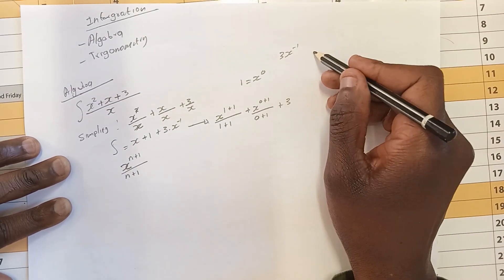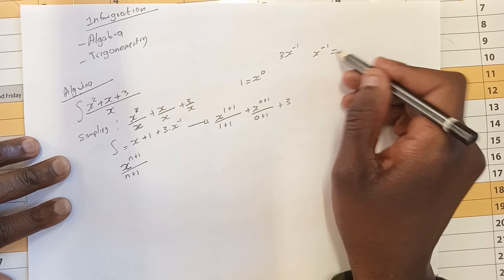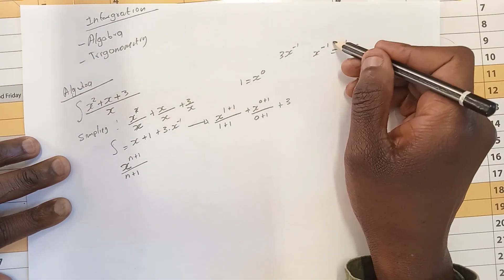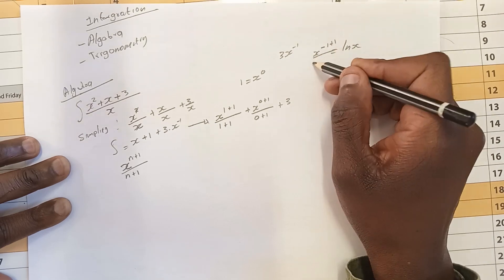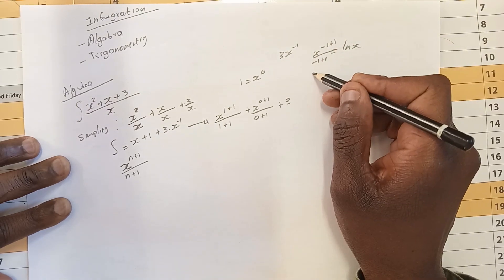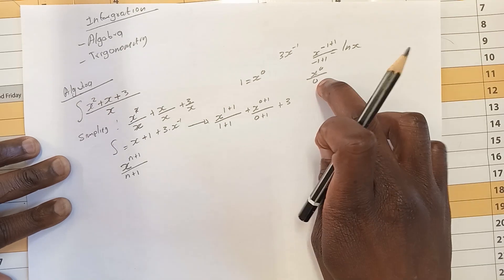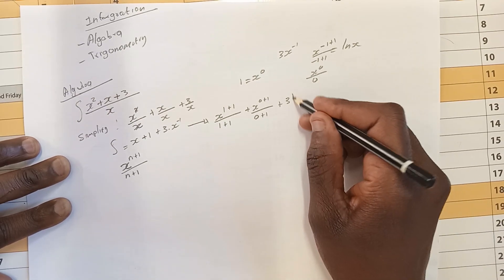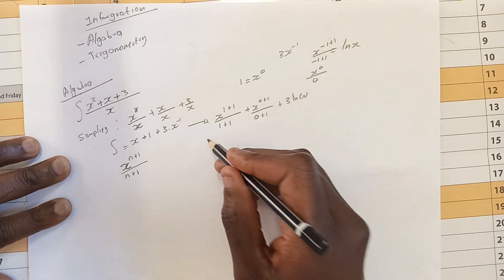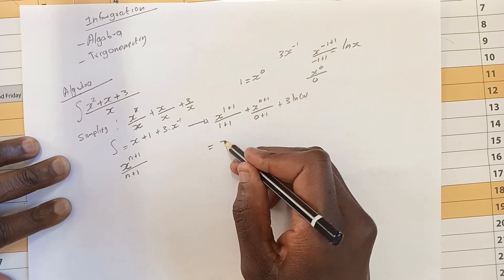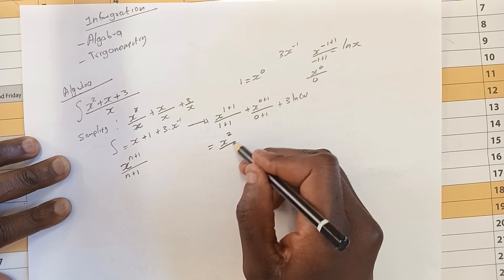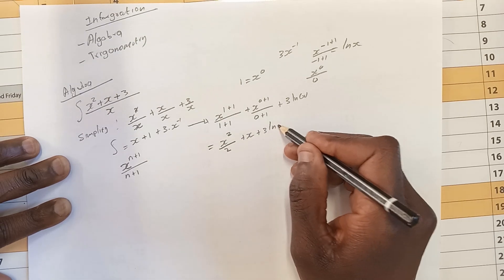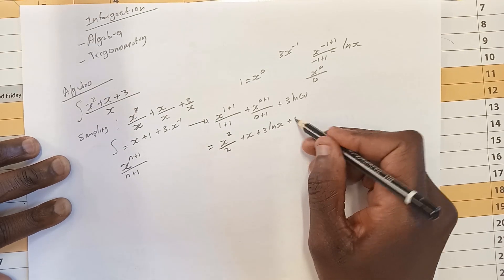x to the exponent 1 is the same as ln x. The exponent is going to be minus 1 plus 1. So it's going to be x to the exponent 0 divided by 0. We know we can't divide by 0 so this is ln x. So our final answer is x squared divided by 2 plus x plus 3 ln x plus c.